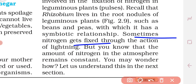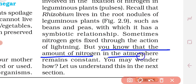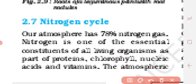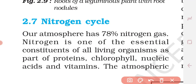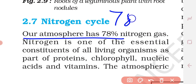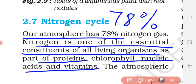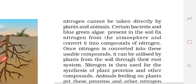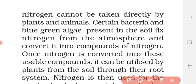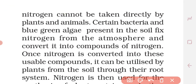Sometimes nitrogen gets fixed through the action of lightning. The nitrogen cycle keeps the amount of nitrogen in the atmosphere constant. In our atmosphere, nitrogen makes up 78%. Nitrogen is an essential constituent of living organisms — as part of proteins, chlorophyll, nucleic acids, and vitamins. However, atmospheric nitrogen cannot be taken directly by plants and animals.